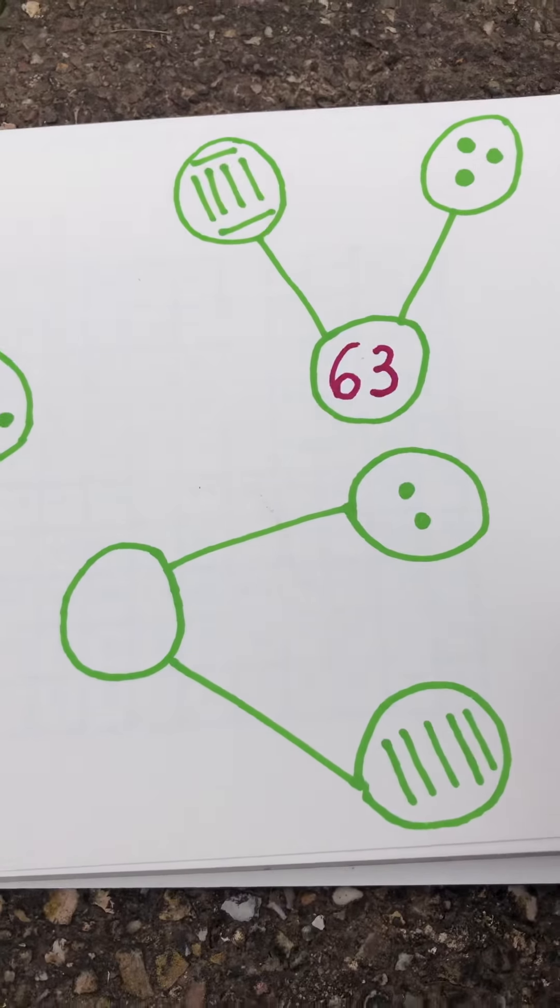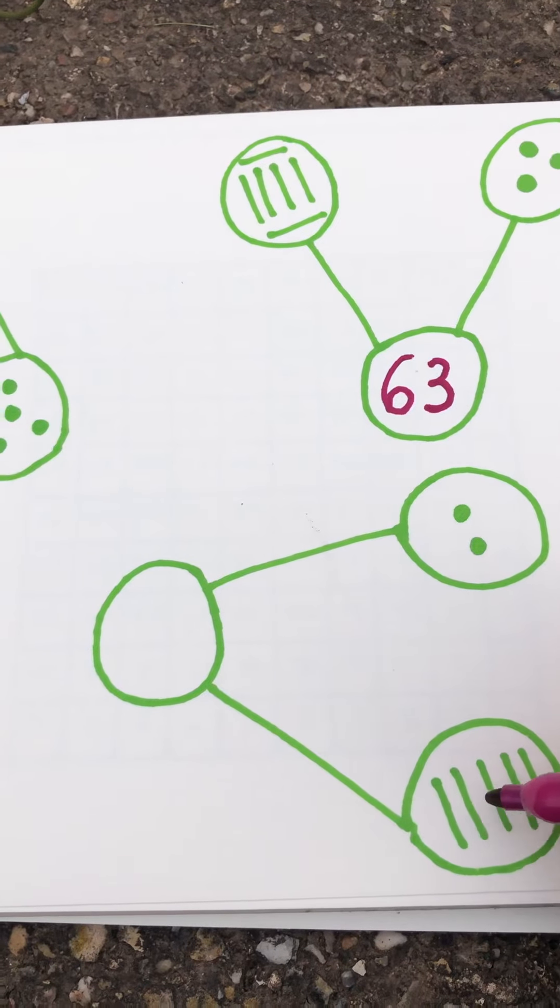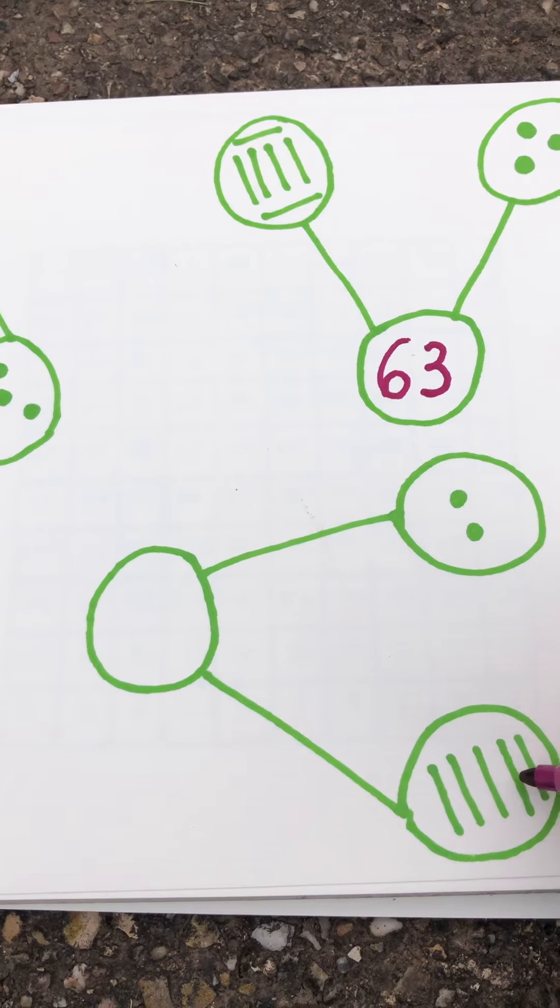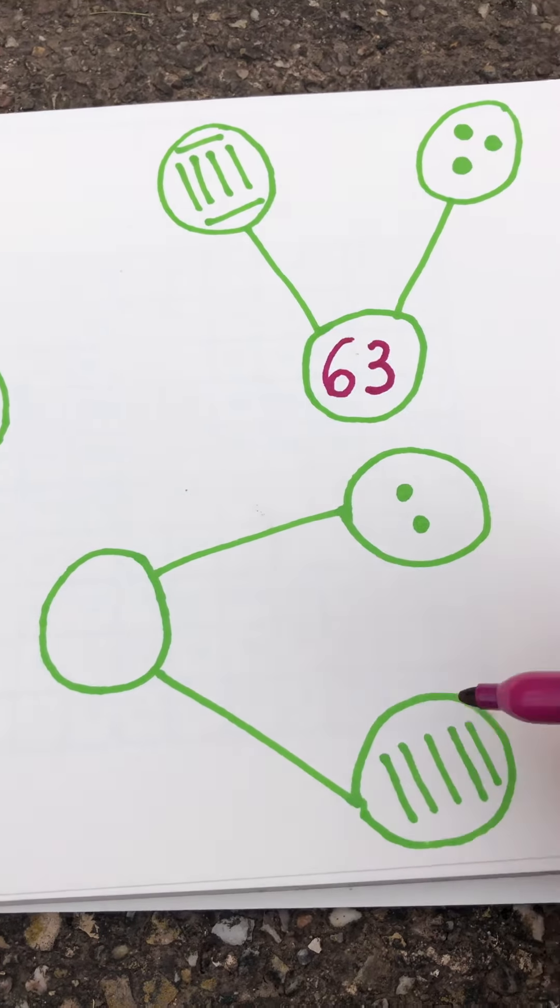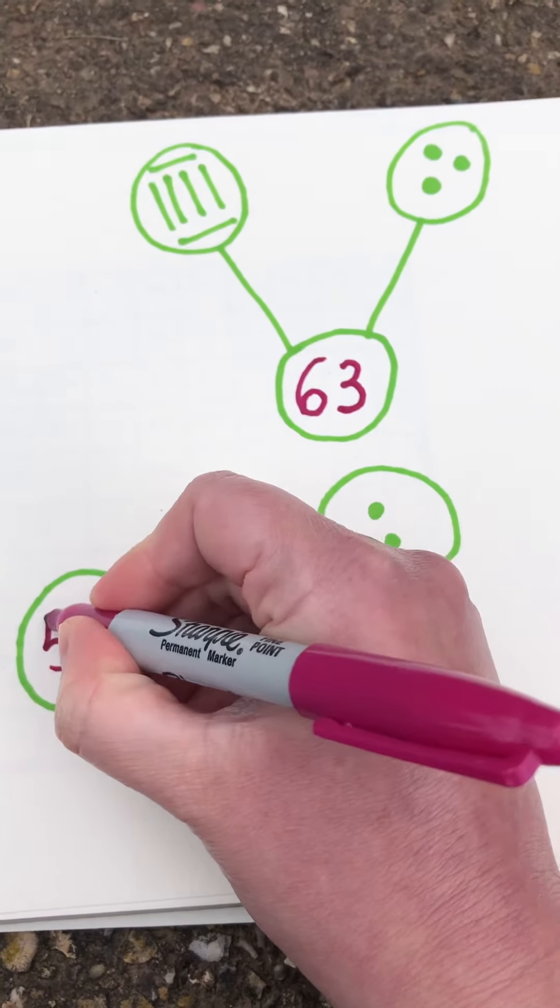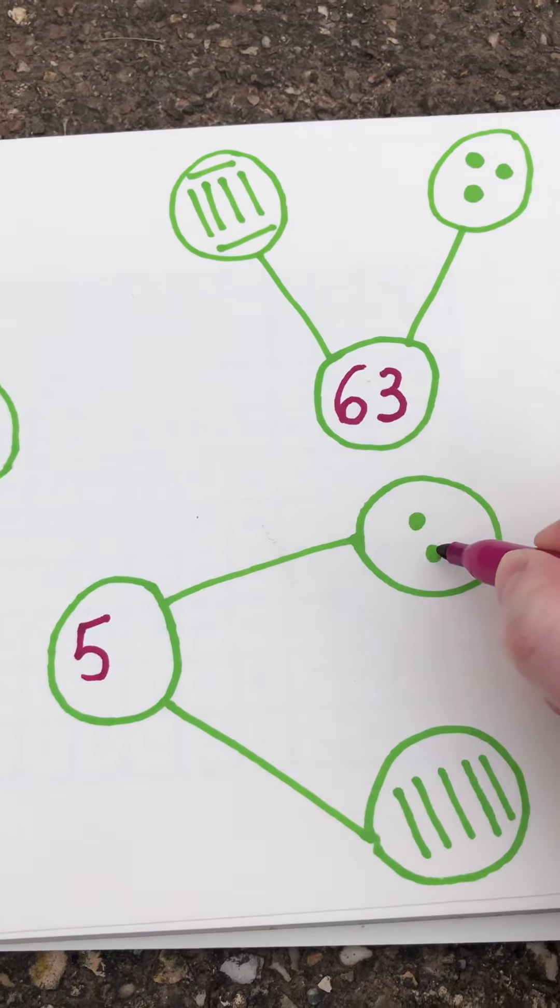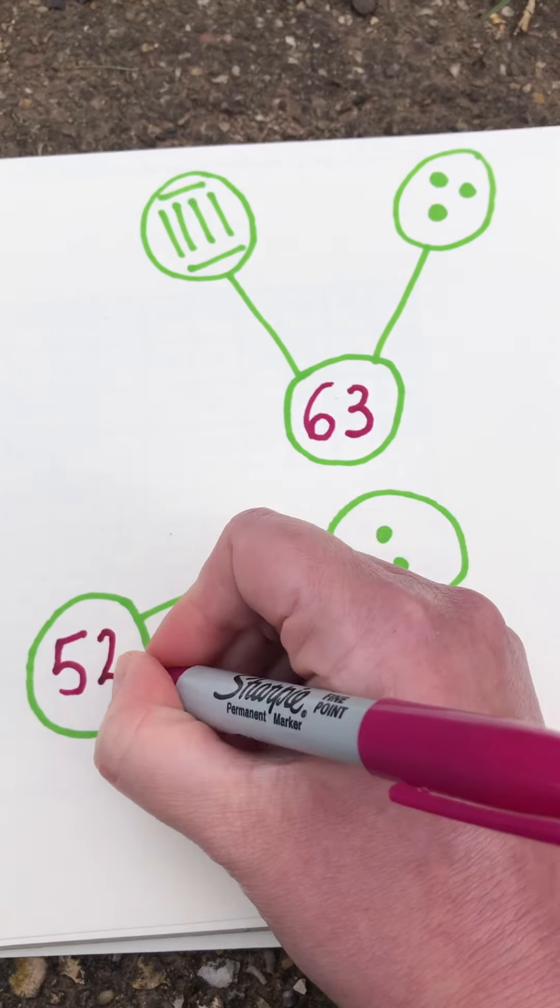Let's have a look at this one. We've got 1, 2, 3, 4, 5 tens. And 1, 2 ones.